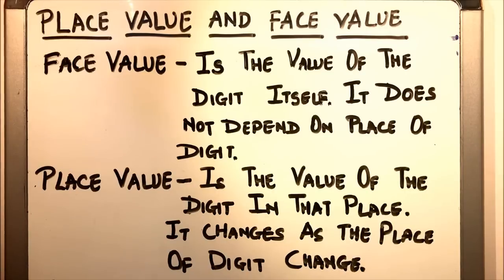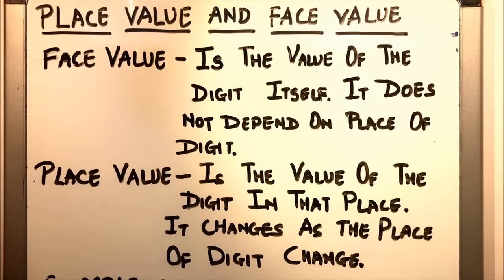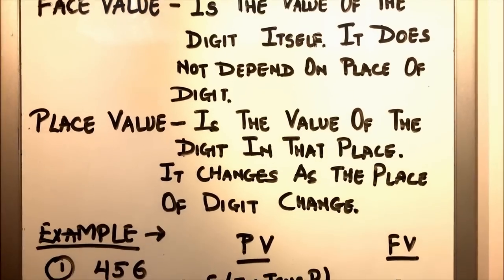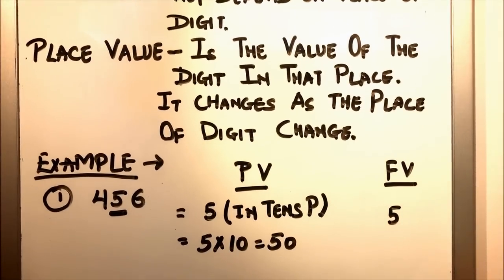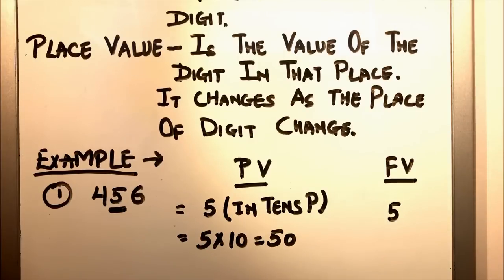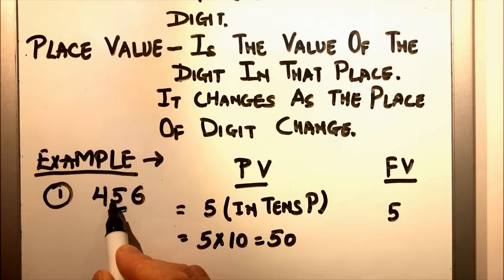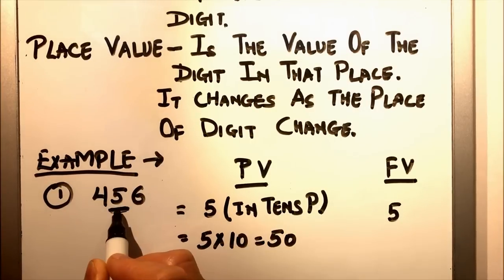Let's clarify this with examples. Let's have an example: 456. Here we need to find the place value and face value of 5. As 5 is in the tens place, its place value is 5 times 10, which equals 50.